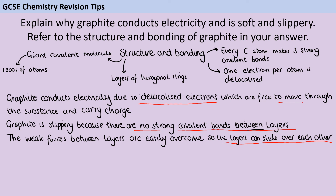If you haven't done so well with this question but you have included those different things from the top, then in a level one answer you would still get credit for those. So if all you've written is that graphite is a giant covalent molecule, you could probably get two marks for that — one mark for the giant structure and one mark for the fact that it's covalent bonding.